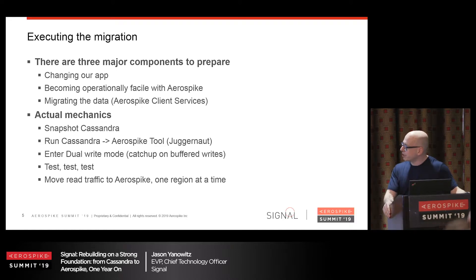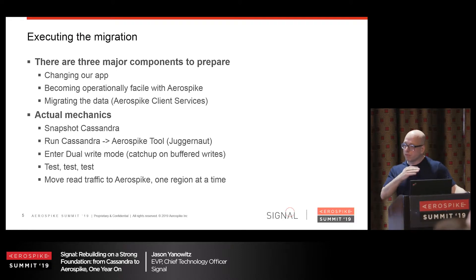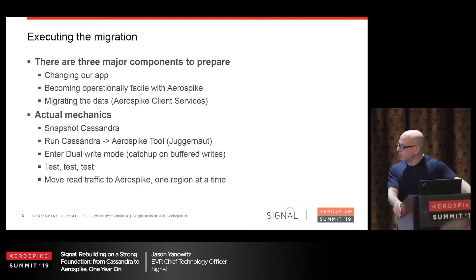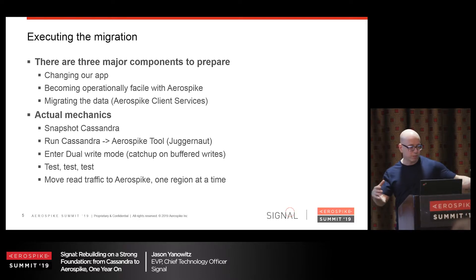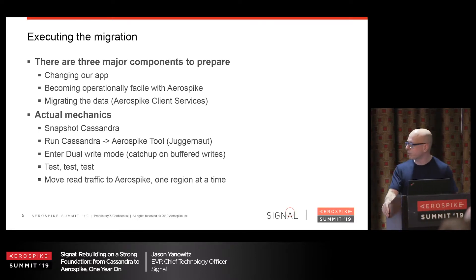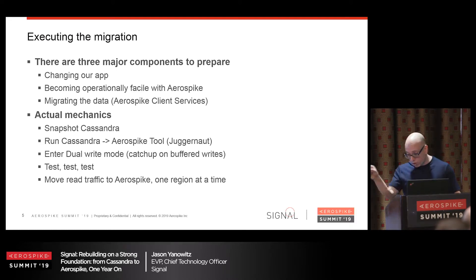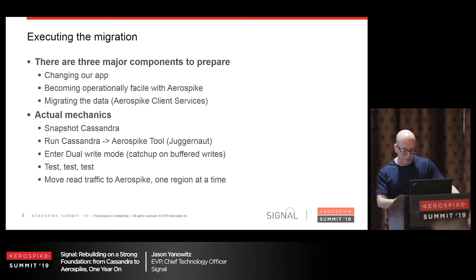One thing to mention: running Juggernaut took about six days to go from start to finish, because there were a trillion rows to process through Cassandra. But the Aerospike cluster was doing 8 million writes a second with a P50 of 10 microseconds and a P99 of less than 1 millisecond, which meant we got a lot of stress testing for free.